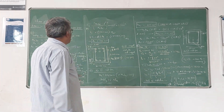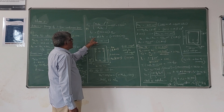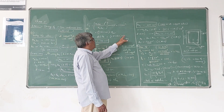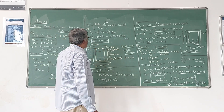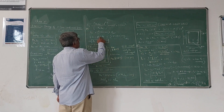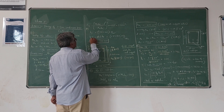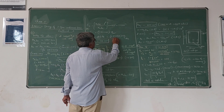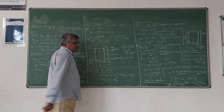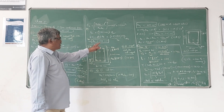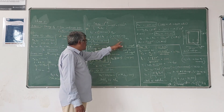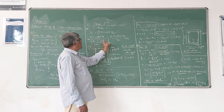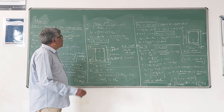We equate the force in the compression steel to the force in the additional tension steel AST2. Stress multiplied by area gives force. So FSC × ASC = FST × AST2. Here FST is known and AST2 is 752 mm². Simplifying, ASC comes out to be 788 mm².